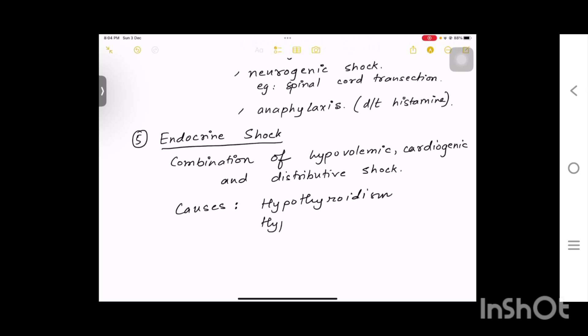Lastly, let's come to endocrine shock. Now endocrine shock is a combination of hypovolemic shock, cardiogenic shock, and distributive shock. So what are the conditions or causes here? That is hypothyroidism, hyperthyroidism, and adrenal insufficiency.